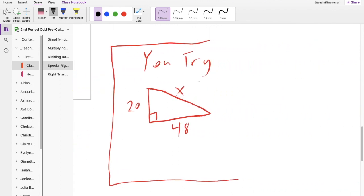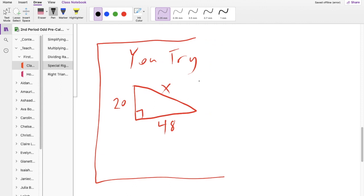So how about you guys try one. You have a 20-48 sides and x is your hypotenuse, so figure out what x is.